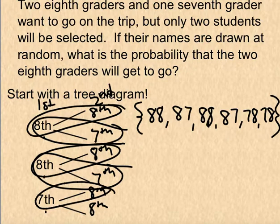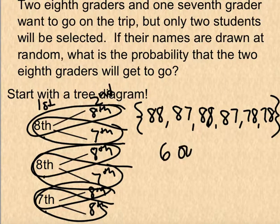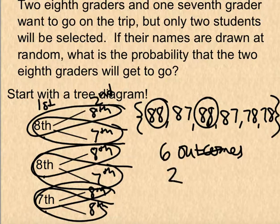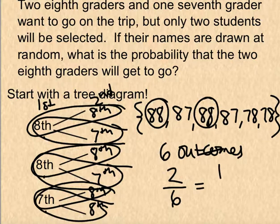We have 6 total outcomes. The probability equals successes divided by total outcomes. Success means getting two 8th graders together, and we have 2 out of 6 outcomes that are successful. So the probability of getting two 8th graders is 2/6, which reduces to 1/3.